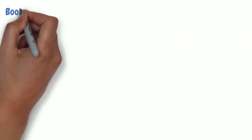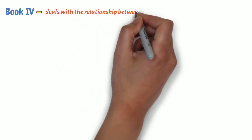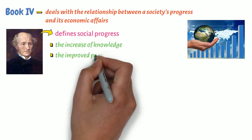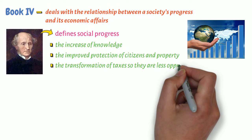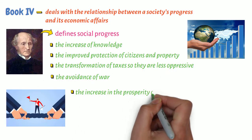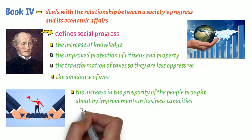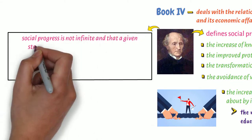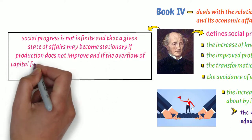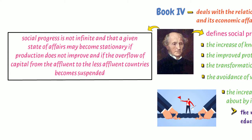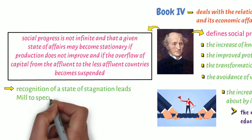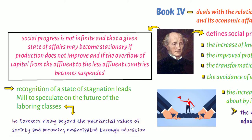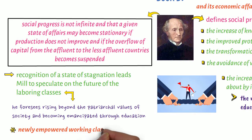Book 4 deals with the relationship between a society's progress and its economic affairs. Mill defines social progress in terms of the increase of knowledge, the improved protection of citizens and property, the transformation of taxes so they are less oppressive, the avoidance of war, and the increase in the prosperity of the people brought about by improvements in business capacities, including the more effective employment of citizens through education. Mill notes that social progress is not infinite, and that a given state of affairs may become stationary if production does not improve, and if the overflow of capital from the affluent to the less affluent countries becomes suspended. This recognition of a state of stagnation leads Mill to speculate on the future of the laboring classes, which he foresees rising beyond the patriarchal values of society and becoming emancipated through education. The newly empowered working class will generate massive change in society.